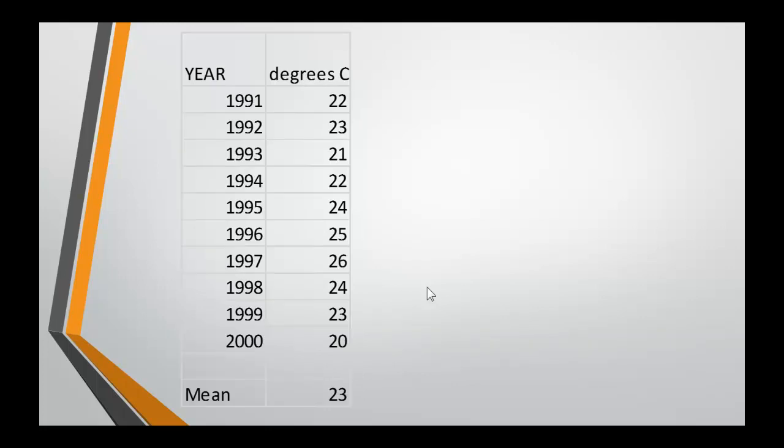So the first step is to determine the mean which is done by finding the sum of all the temperatures and then dividing by the number of years. The answer here is 23 degrees. In some articles you may find the mean referred to as the average. Now as long as it is calculated in this way then we are talking about the same thing.